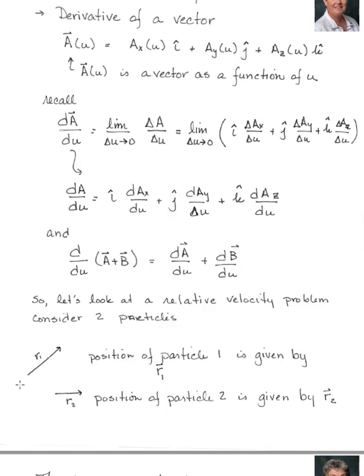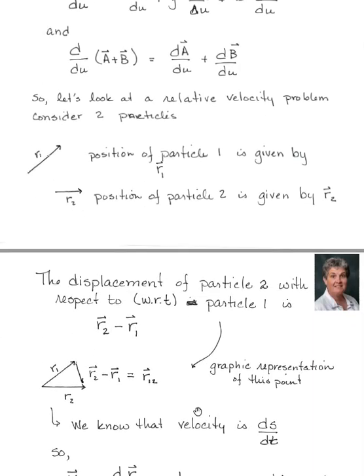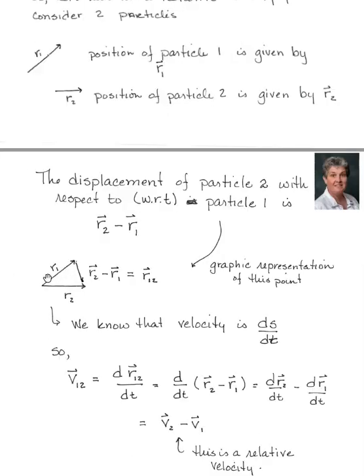So we have two particles. We have r1, the position vector of particle 1, and r2, the position vector of particle 2. If we look at the displacement of particle 2 with respect to particle 1—quick side note: you'll see 'wrt', which means 'with respect to', as shorthand. So if I do r2 minus r1, we get that displacement vector. Here's our r1 and r2, and I can represent this mathematically as a graphic representation.